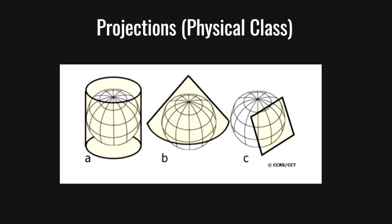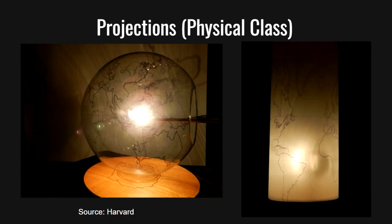You might be wondering why we call them map projections. They're called projections because the three-dimensional Earth is projected onto a cylinder, cone, or flat plane, and then unrolled to create a flat image of the Earth. For example, by projecting land surfaces from a globe using a light source onto a cylinder, the result can be recorded and later unrolled to create a flat representation of the Earth.